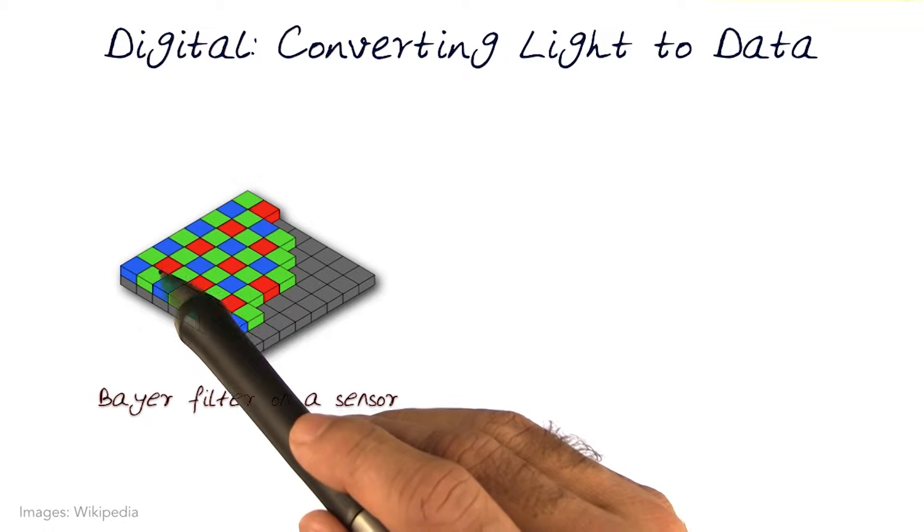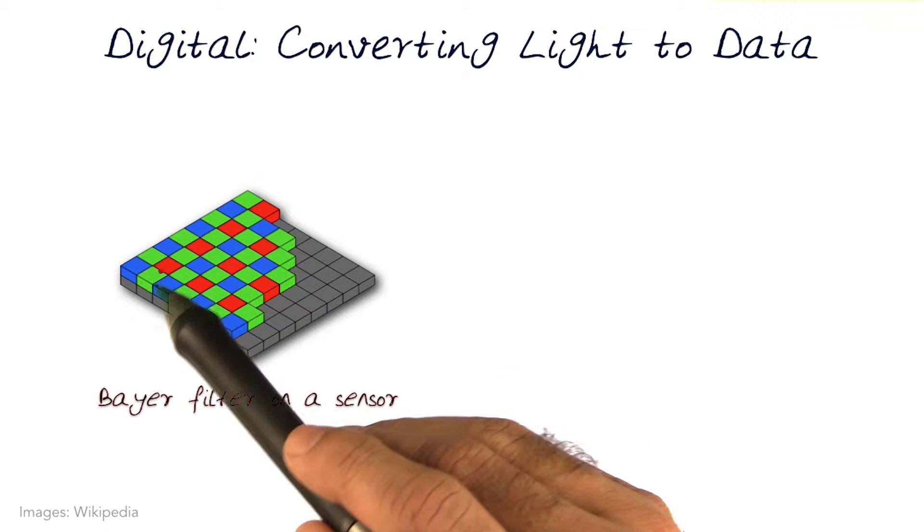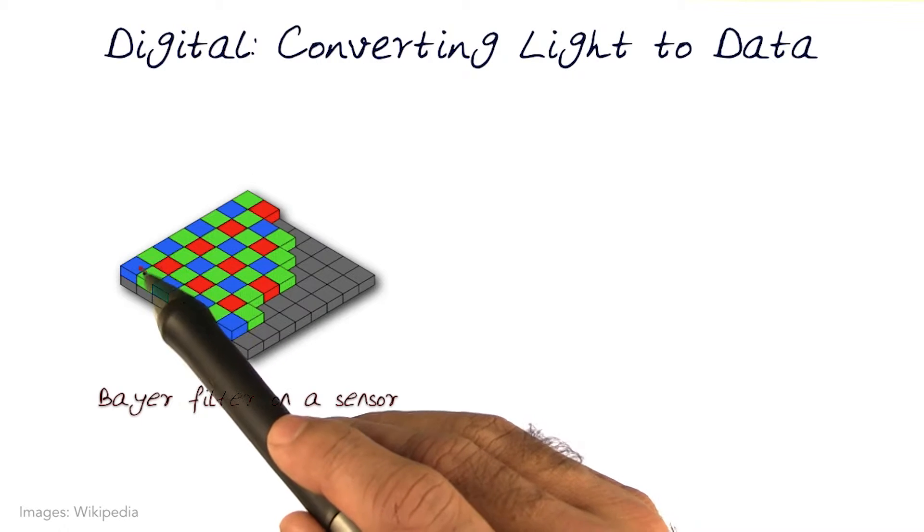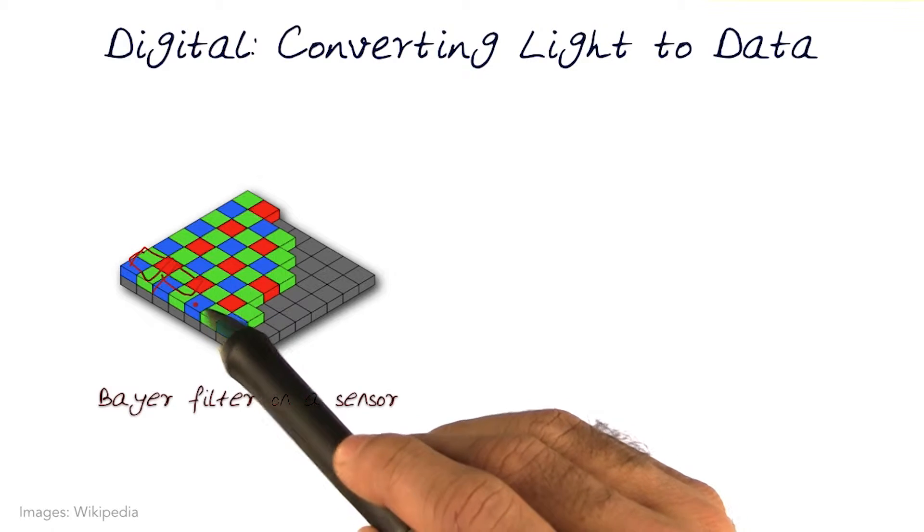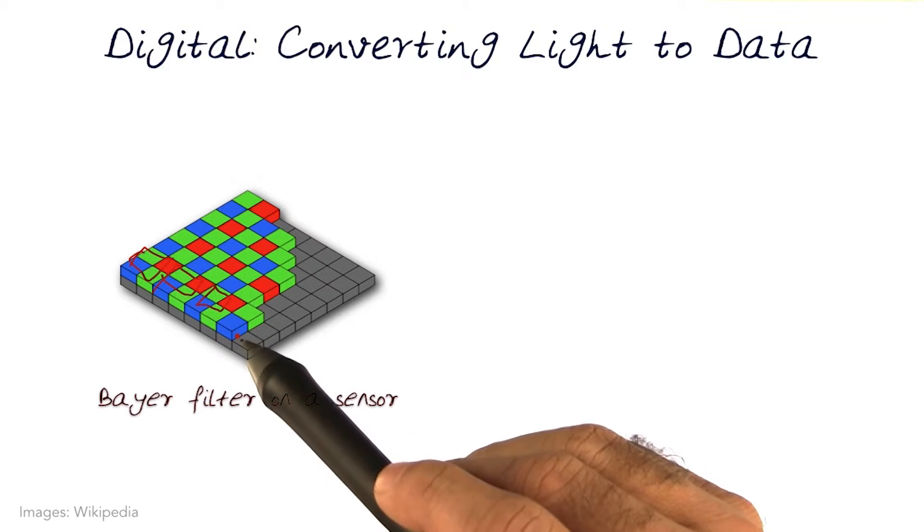And most of the time, you'll actually see two greens and a blue and a red. So this would be the four region here that represents one pixel, another here that presents another pixel, and so on.